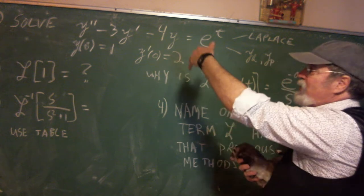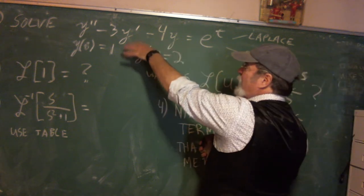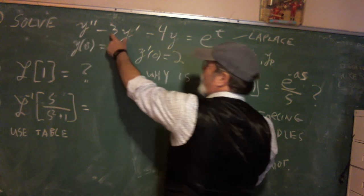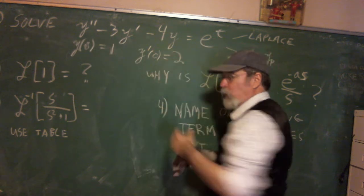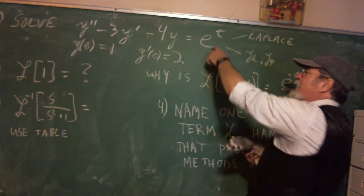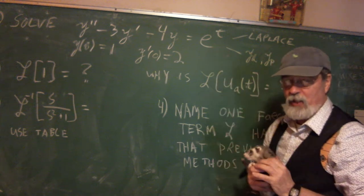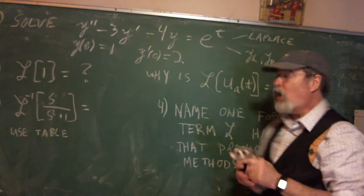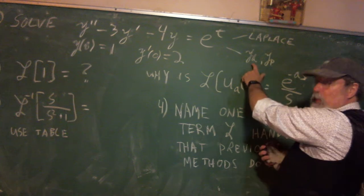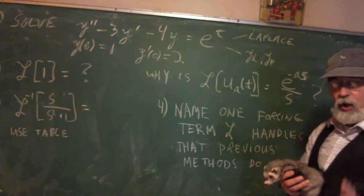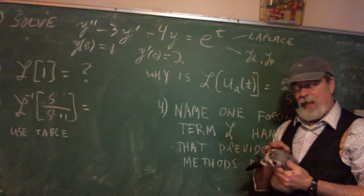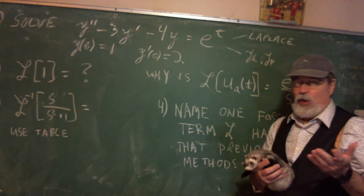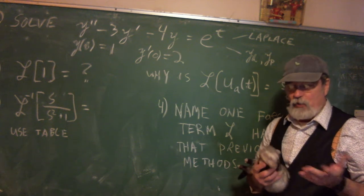Suppose we have a regular old second order. It's going to be kind of nice because R squared minus three R minus four will factor. And this is not a scary forcing term because it doesn't resonate, it doesn't match. So I can solve that using regular old homogeneous and particular solution, or I can solve it using Laplace transforms. It's not exciting doing it with Laplace transforms because you already know what the answer is going to be doing it the other way.